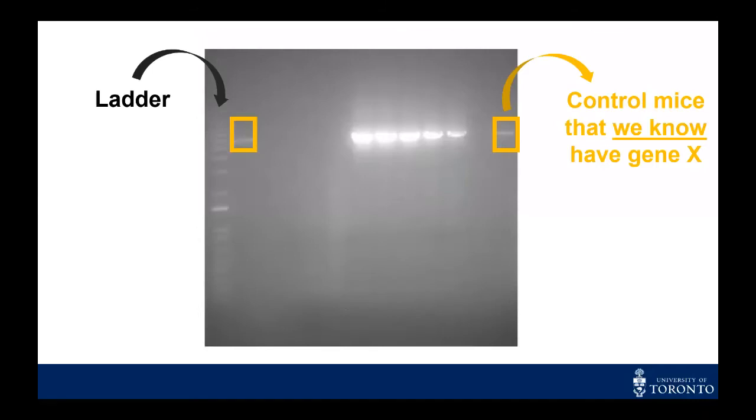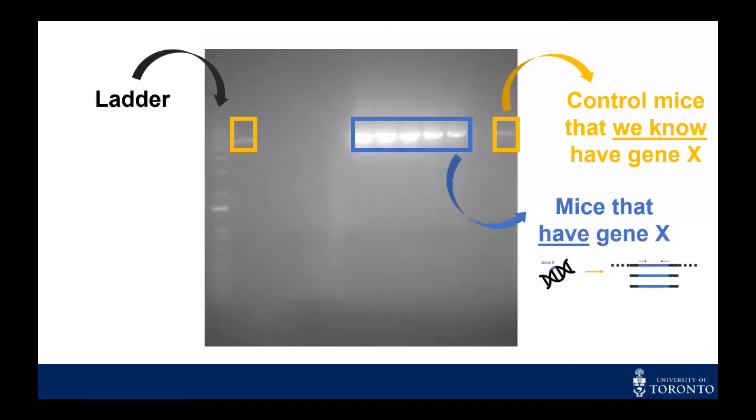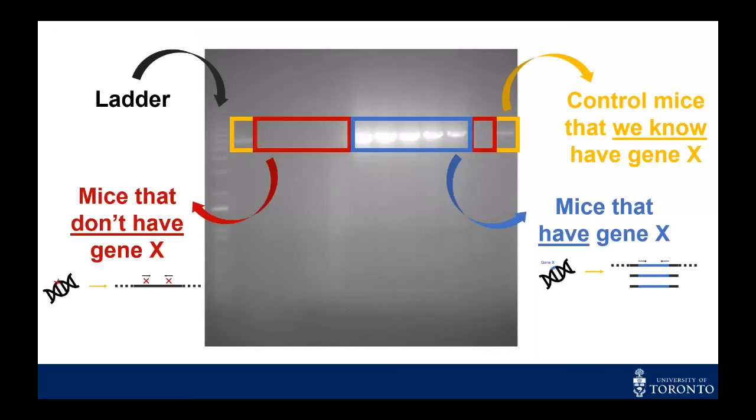In the first lane, we have the ladder. This gives us an idea of the sizes of our samples. Here, highlighted in the yellow boxes, are samples of control mice that we know have GeneX. Next to it, we see some samples that have the same band. These are mice that have GeneX. And on the left, there are lanes without any bands. This shows that these mice don't have GeneX. Now we know which mice don't have the gene and which mice do. This means that we can do tests on these mice to see what happens when GeneX is gone. This will help us figure out what GeneX does.